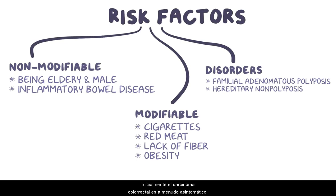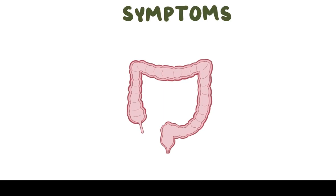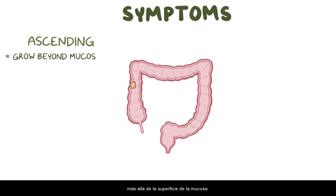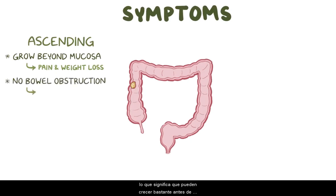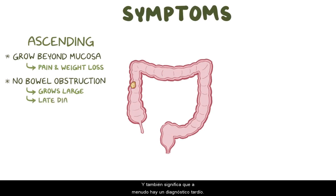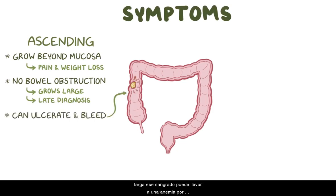Initially colorectal carcinoma is often asymptomatic, but as the disease progresses, symptoms can develop depending on the tumor's location. Tumors in the ascending or right colon generally grow outward beyond the surface of the mucosa, and that can cause vague abdominal pain and weight loss. Typically these tumors don't cause bowel obstruction, which means that they can grow quite large before causing symptoms, often resulting in a late diagnosis. These tumors can ulcerate and bleed, and over time the bleeding can lead to iron deficiency anemia.